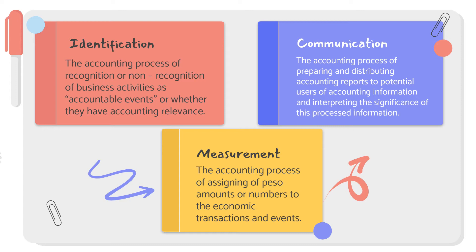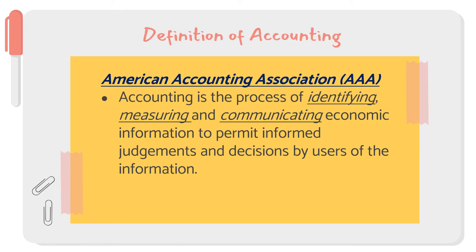Similar to the ASC definition, the general purpose is to make use of accounting information for economic decisions — for the important things that may happen in your business. So from the AAA, accounting is a process of identifying, measuring, and communicating economic information to permit informed judgments and decisions by users of the information.